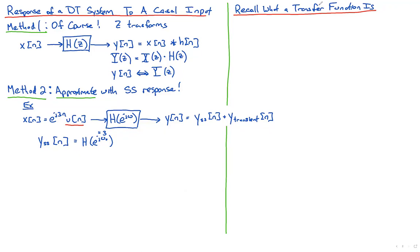We want to understand what the transient part of the output looks like, because the steady-state part is easy to calculate. If the transient looks small, we can ignore it entirely and use the approximation: instead of computing a full Z-transform, inverse Z-transform, and partial fraction decomposition, we simply substitute into H(e^{jω}) to instantly find the steady-state output. The quality of this approximation depends on how close the transient response is to zero.